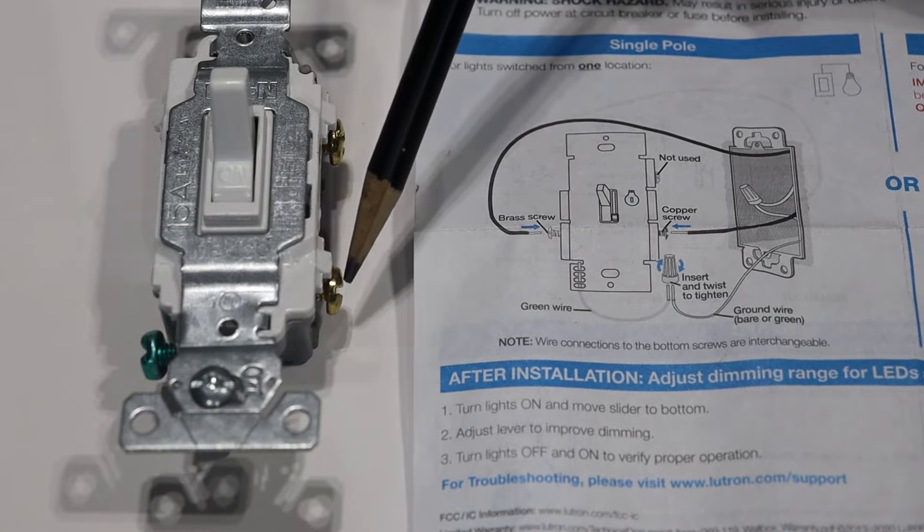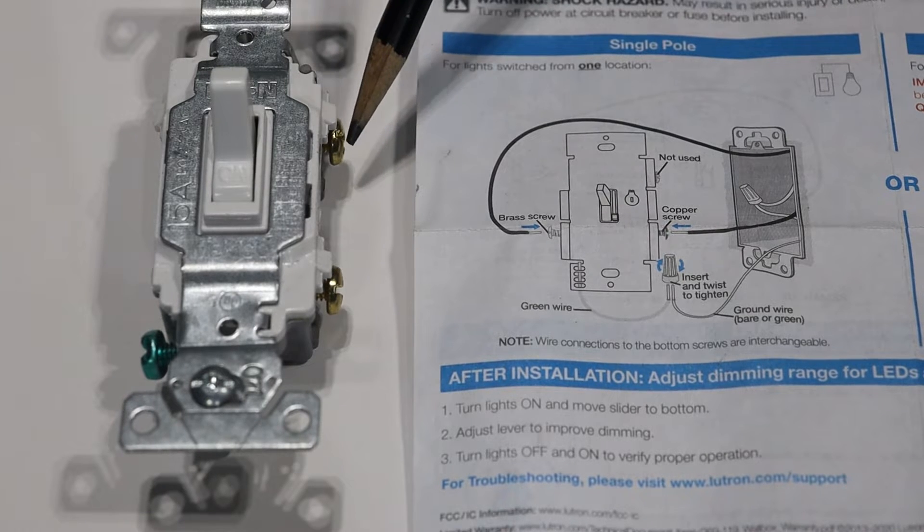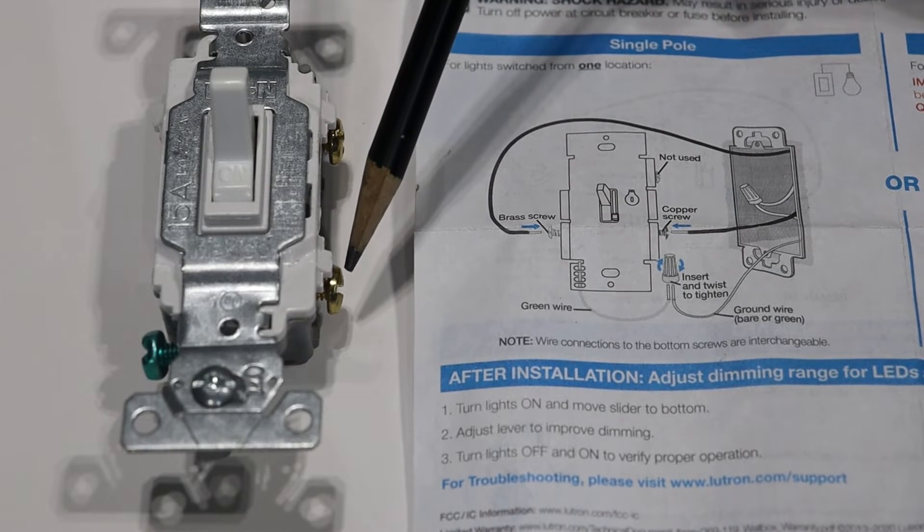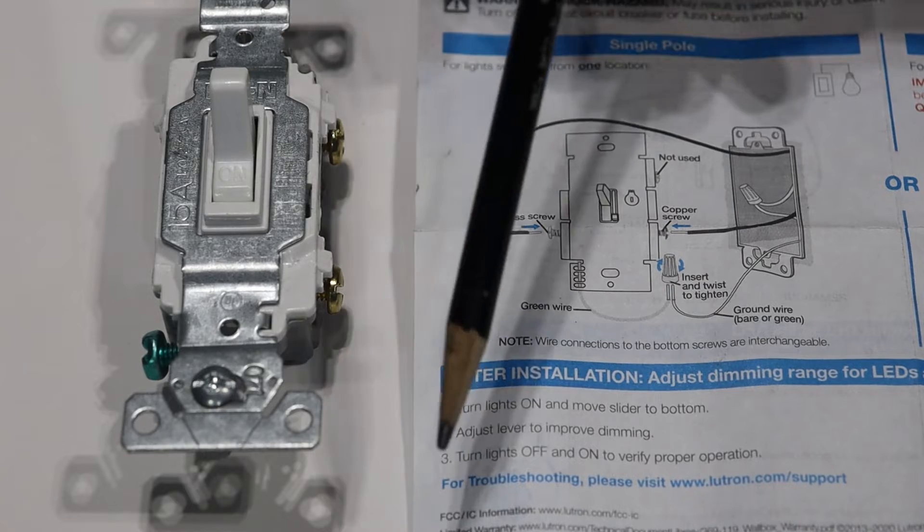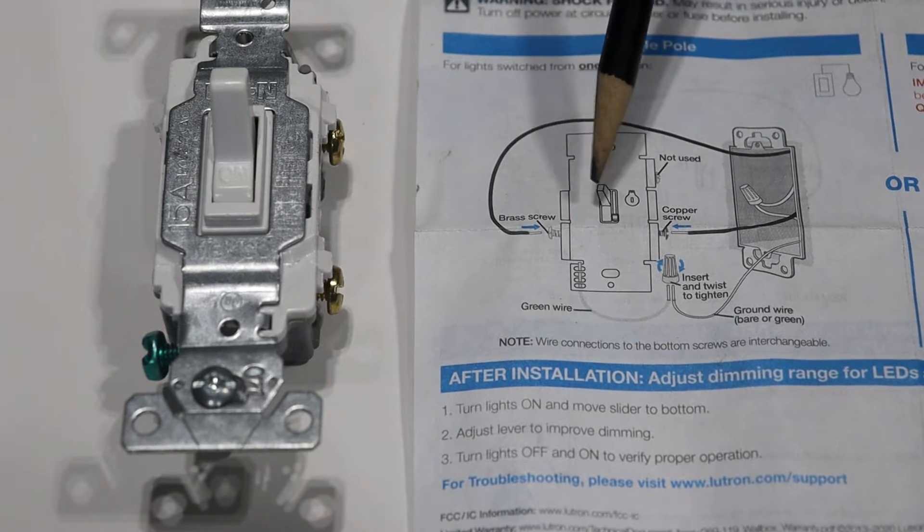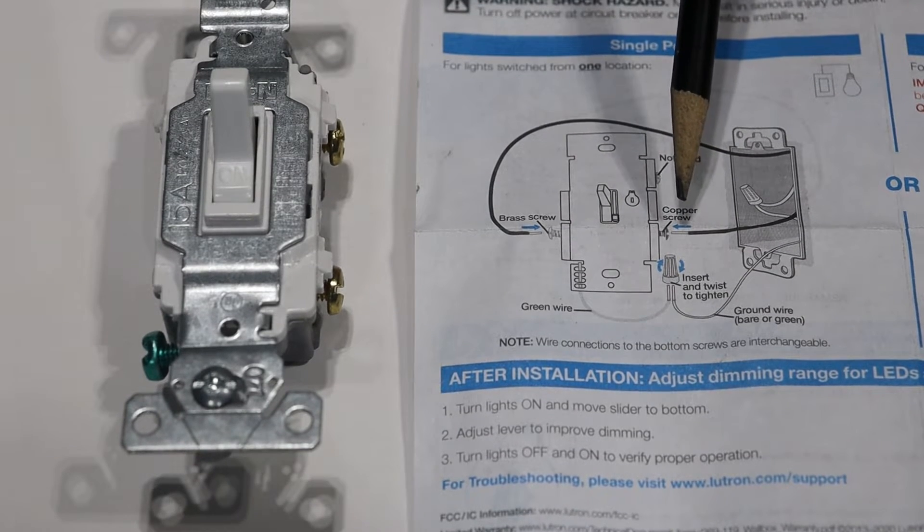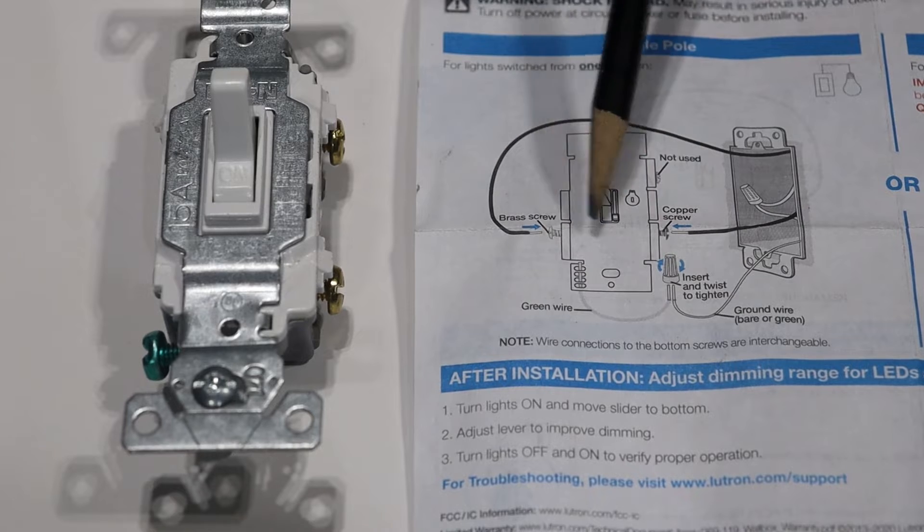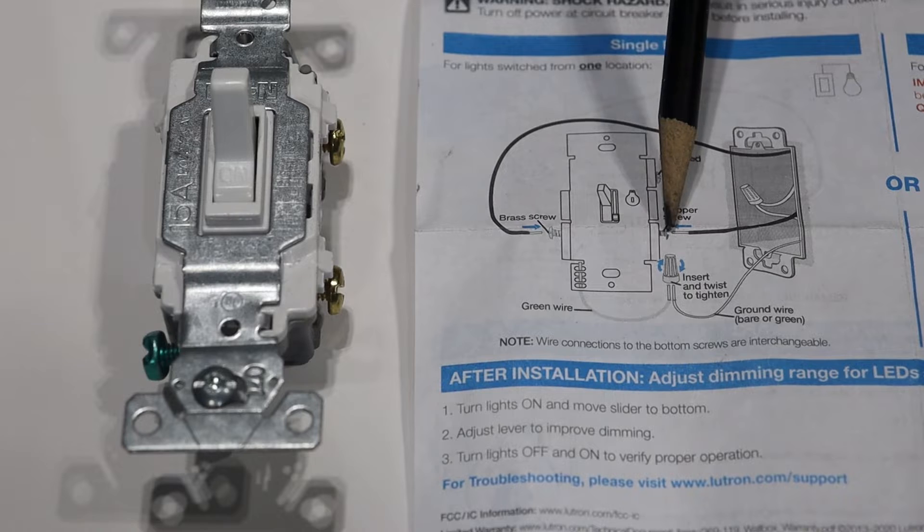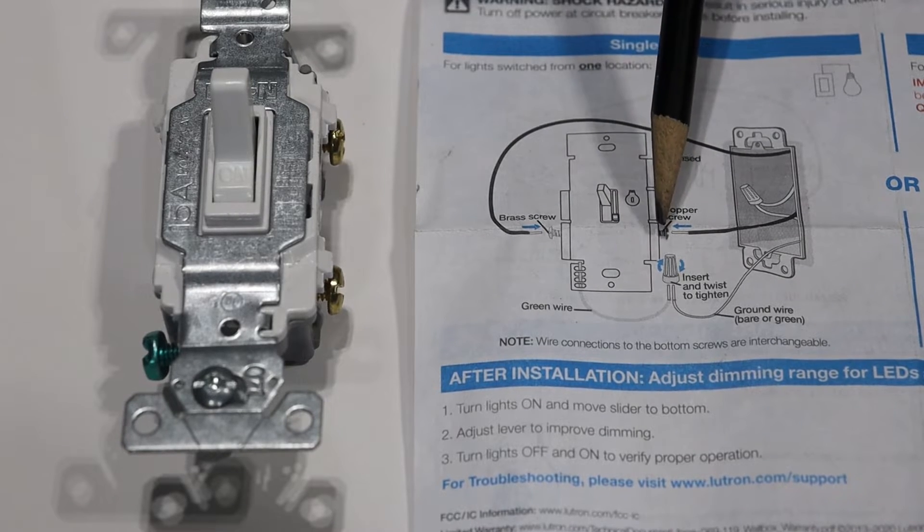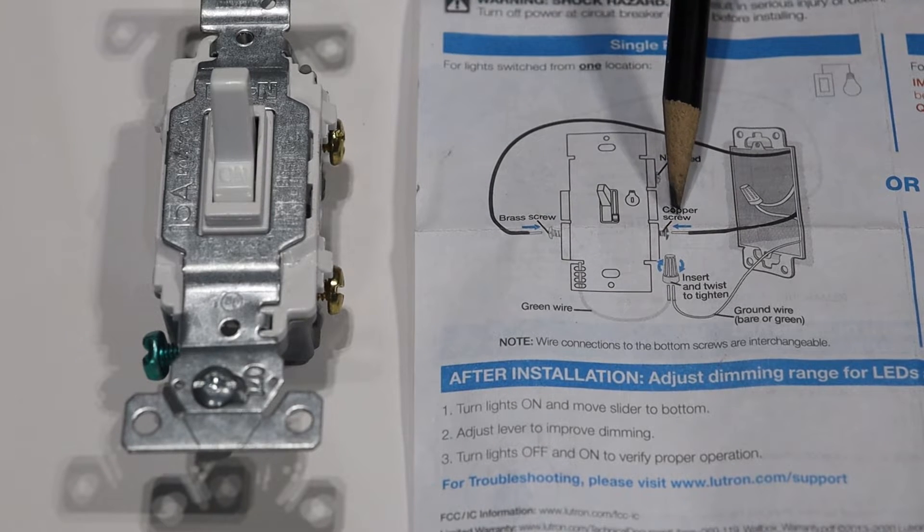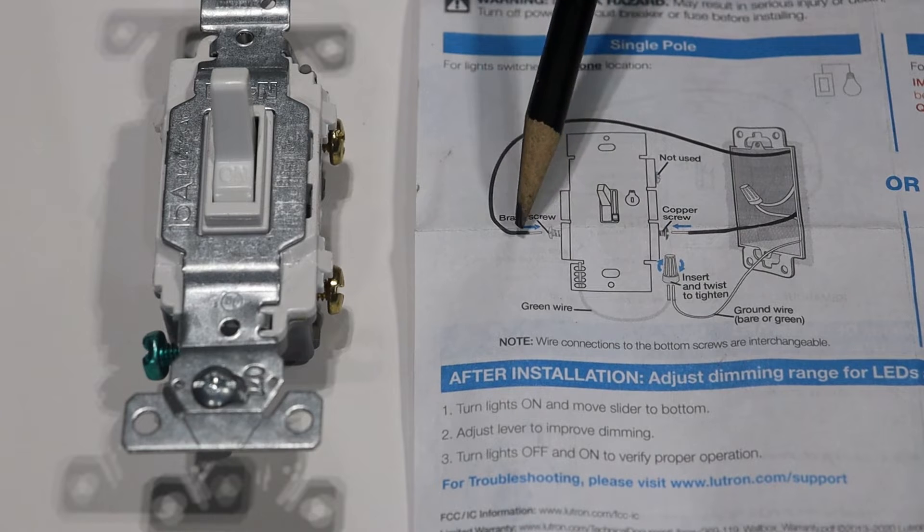So just a quick review on a single pole switch you have the ground screw and you have a screw where the power can come in and you have a screw where the power leaves. Keep in mind that on a single pole switch it doesn't really matter which one of these wires are hooked up to the hot wire and which one of these screws are hooked up to the wire that goes up to the light. All this switch is doing is just creating a break in this circuit. On your dimmer switch in the instructions it doesn't actually specify which wire needs to go to which screw. So it's essentially the same thing. One wire comes into this copper screw, the other one goes into this brass screw.